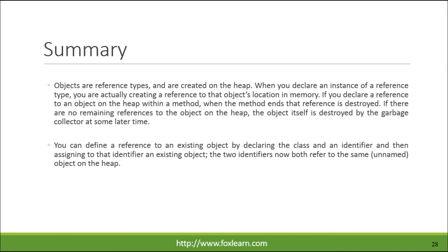You can define a reference to an existing object by declaring the class and an identifier, and then assigning to that identifier an existing object. The two identifiers now both refer to the same, unnamed object on the heap.